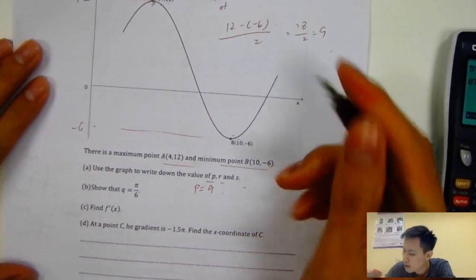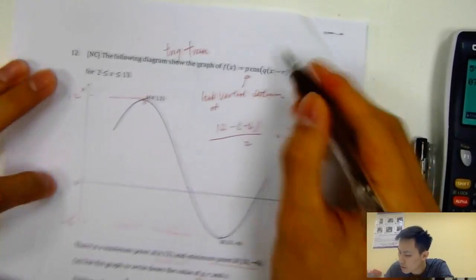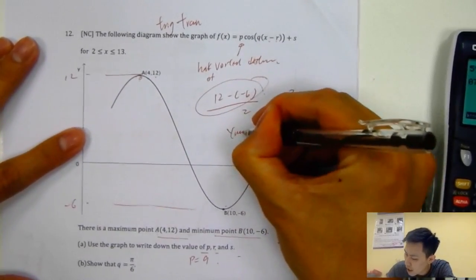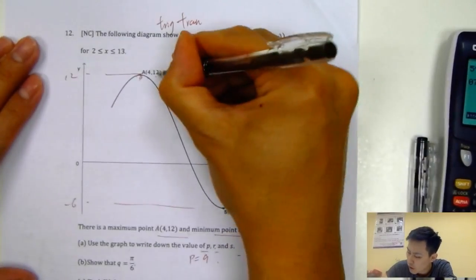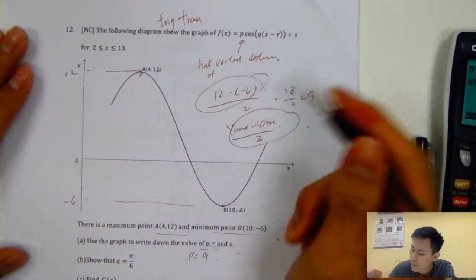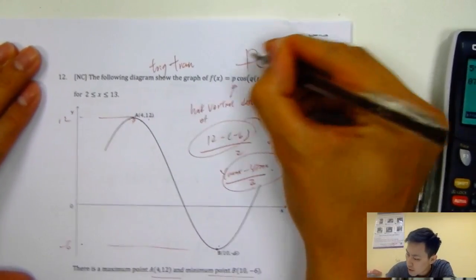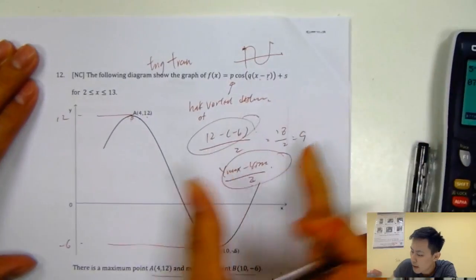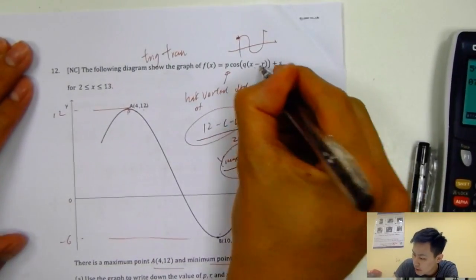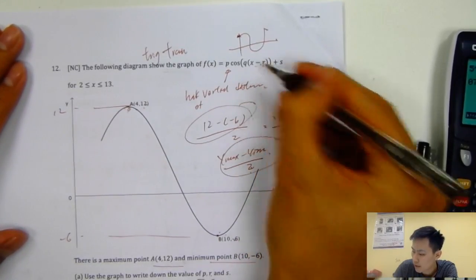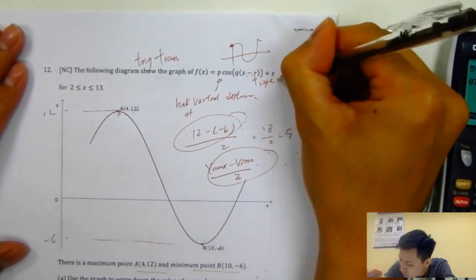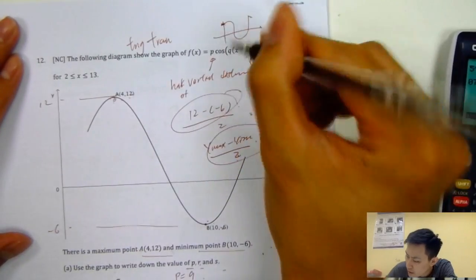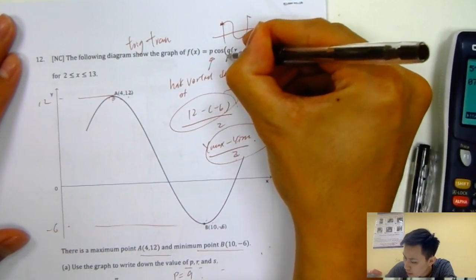The general rule is (y_max minus y_min) over 2 — use y values, not x values. For q: b times period equals 2π. The period is the horizontal distance to complete one full cycle. Half the cosine graph goes from x=4 to x=10, so the half-period is 10 minus 4 = 6, and the full period is 6 times 2 = 12. So q times 12 = 2π, giving q = 2π over 12 = π over 6.